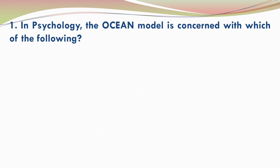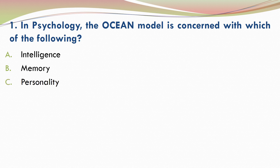Question 1. In psychology, the OCEAN model is concerned with which of the following? Is it A. Intelligence, B. Memory, C. Personality, or D. Trauma?